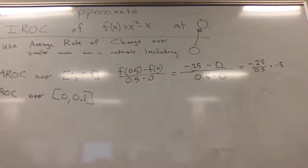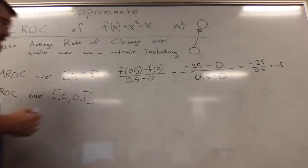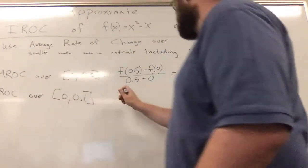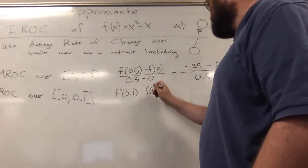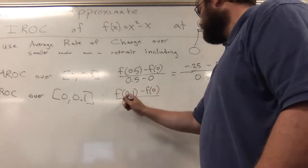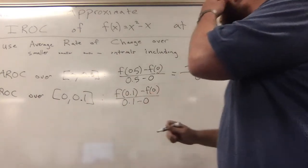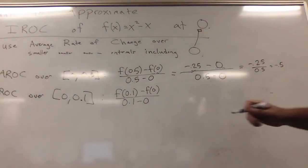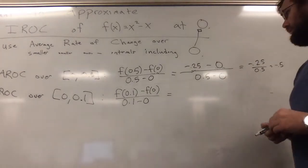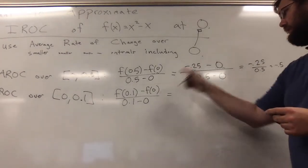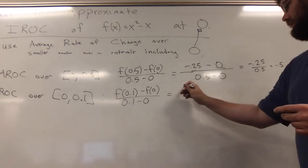A better approximation would be to do the average rate of change over [0, 0.1]. In that case I would have f(0.1) - f(0) over 0.1 - 0.